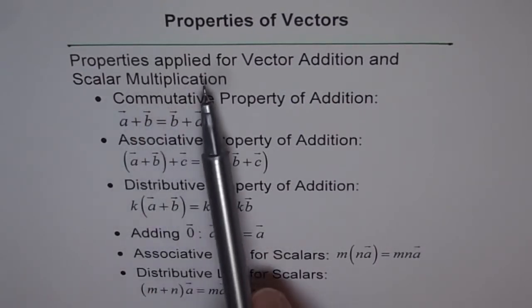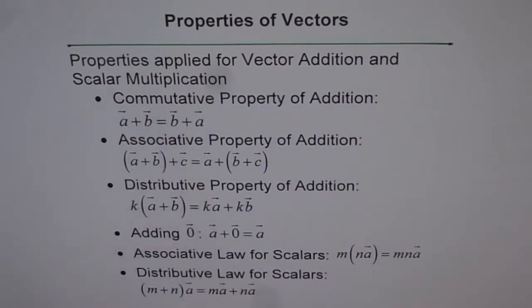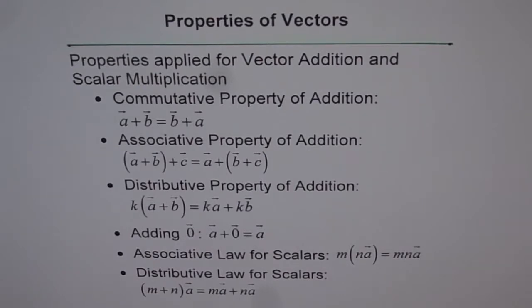Now, the properties applied for vector addition and scalar multiplication. There are two types of properties here. When we talk about properties of vectors, we are considering two things. One is properties for addition and the other one is scalar multiplication. Remember that. And therefore, in the properties, you will find two different kinds of names. I would like you to remember that and notice that.